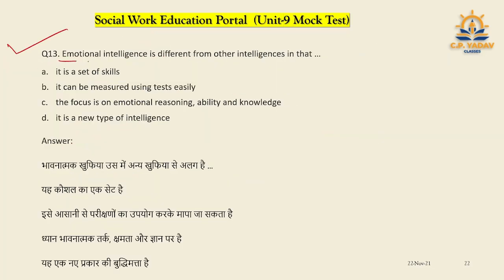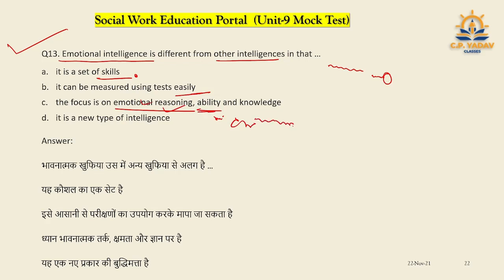Question number thirteen: Emotional intelligence is different from other types of intelligence. In what sense? It has a set of skills, it can be measured using tests easily, and it focuses on emotional reasoning — emotional thinking, concern, and knowledge. It is not a 'new type' of intelligence, so C is the right answer.